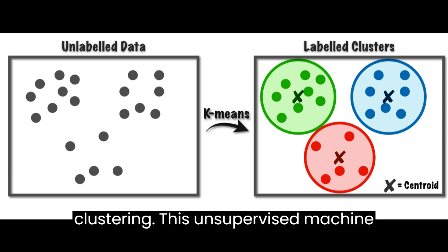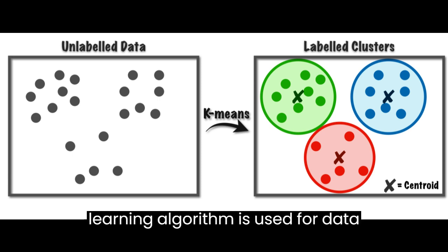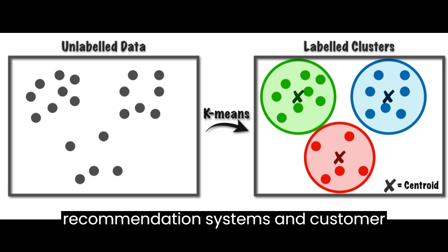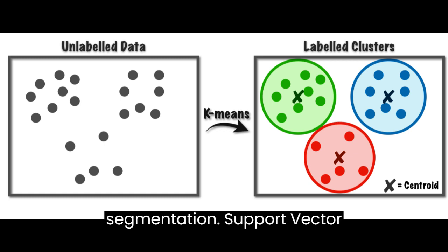K-means clustering. This unsupervised machine learning algorithm is used for data clustering and segmentation. It has applications in marketing, recommendation systems, and customer segmentation.